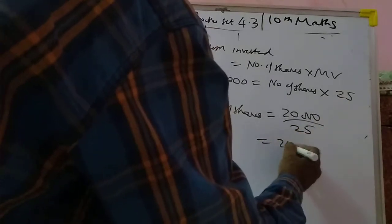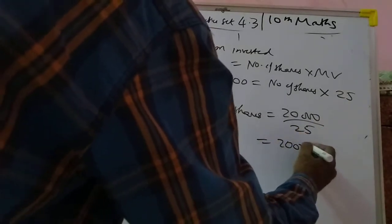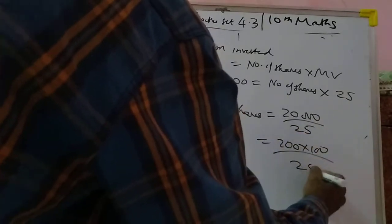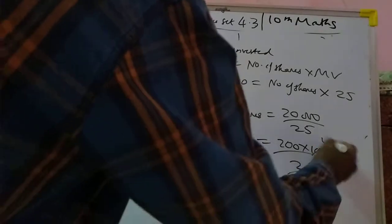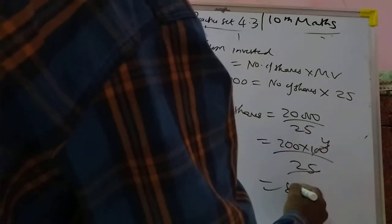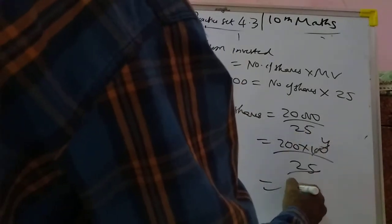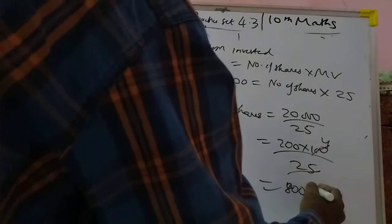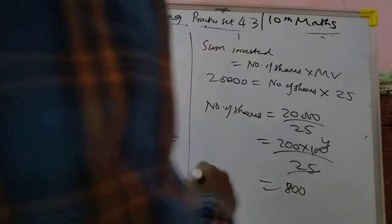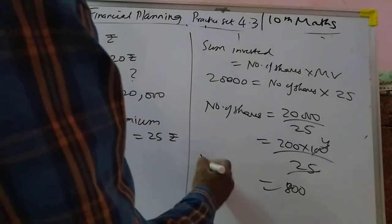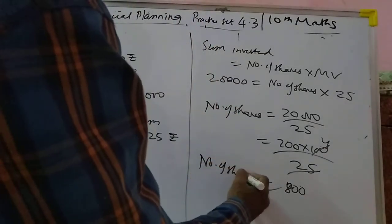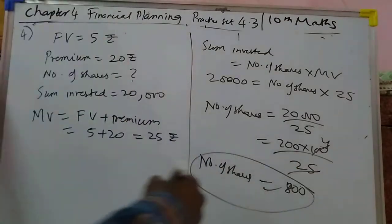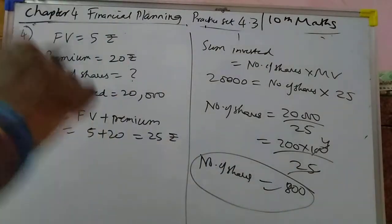Breaking it down: 25 into 4 is 100, 4 into 8 is 32, so you will get 800 shares. That is what you have to write — number of shares equals 800. I hope you got this.